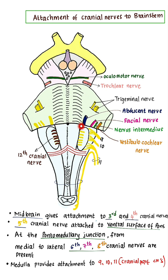At the pontomedullary junction, from medial to lateral, the 6th, 7th, and 8th cranial nerves are present — the abducent nerve, the facial nerve, and the vestibulocochlear nerve.